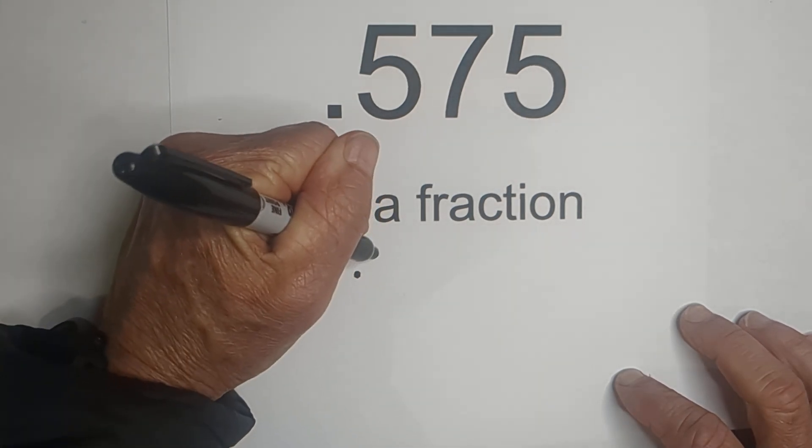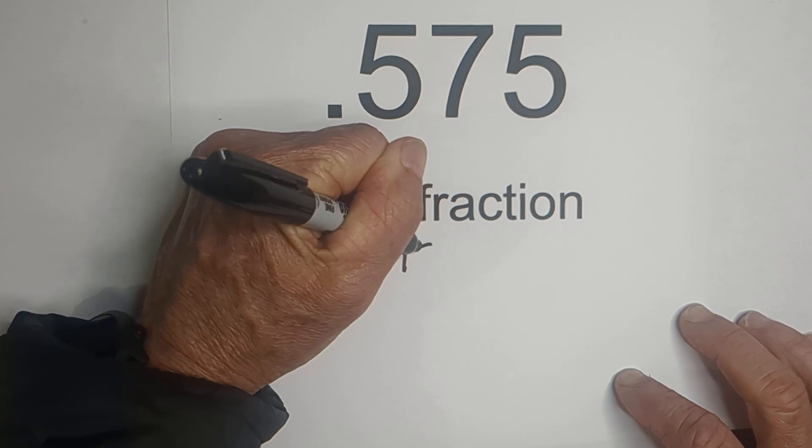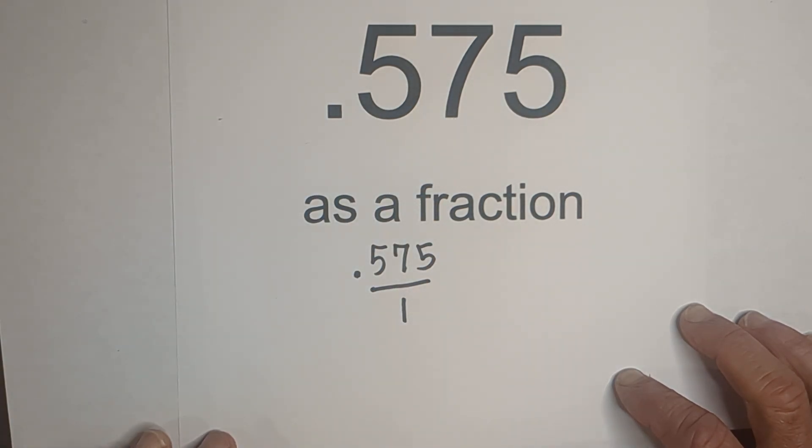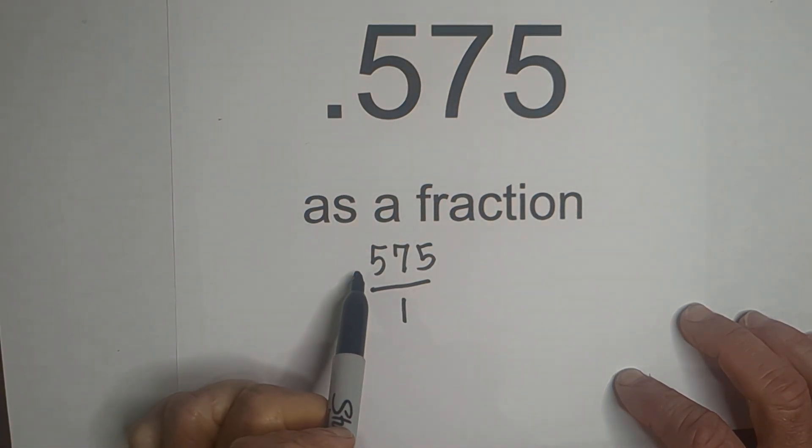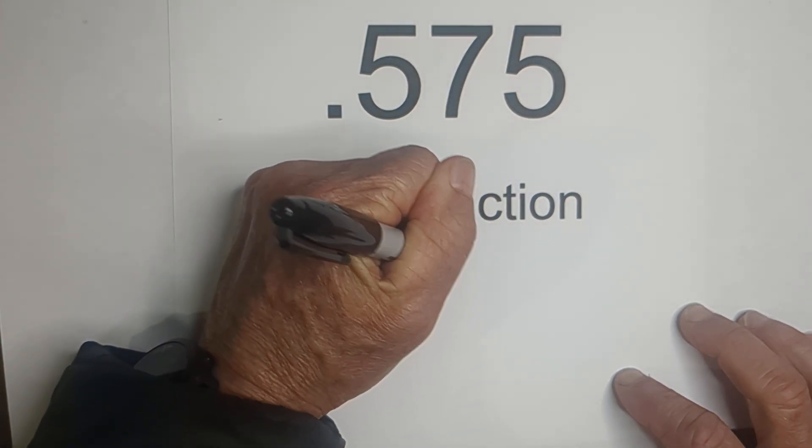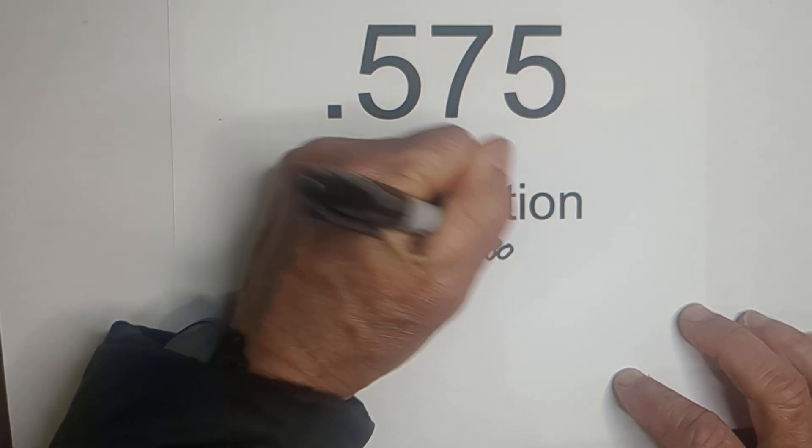So step one is I'm going to place it over one. I now need to move the decimal all the way to the right. I need to move it one, two, three places to get rid of the decimal. So I can do that by multiplying it by 1,000.